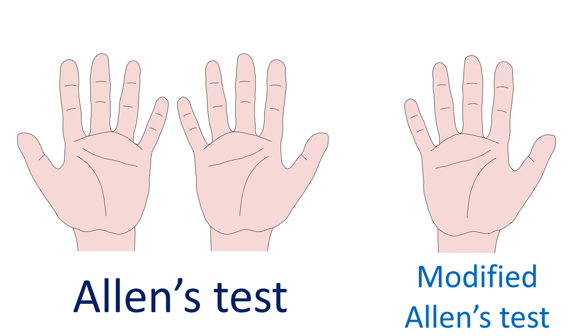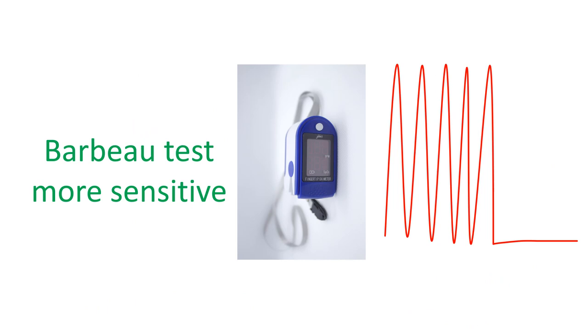The Barbo test utilizes pulse oximetry and plethysmography to assess the palmar arches. This method is more sensitive than the modified Allen's test. Using the Barbo test, only 1.5% of patients were unsuitable for the radial approach, while the modified Allen's test excluded 6.3%.